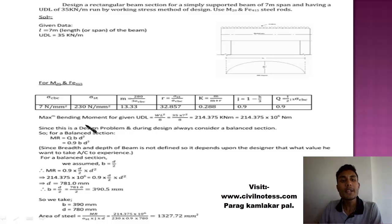Okay, so maximum bending moment. This is our first step. Maximum bending moment for the given uniformly distributed load is calculated by WL square by 8.